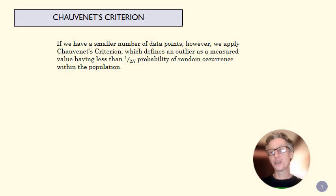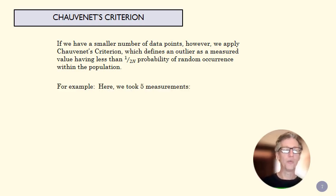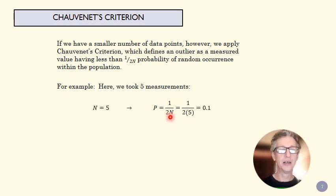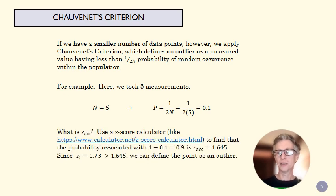So, here we took five measurements. And so I can define my probability as 1 over 2n, which is 1 over 10. So, a 10% probability. What's my z-score that's associated with 1 minus 0.1, which is 90%?